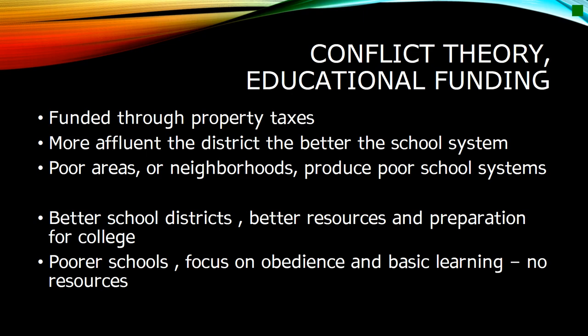The conflict perspective views the hidden curriculum of education in a negative light. It serves to keep students in line, primarily students of the working class, who attend poorer schools that tend to focus on obedience and basic learning. Middle class students will attend schools that encourage some independent or self-directed learning and have access to better resources. Upper class or students from affluent families generally attend private schools which help prepare students for college. Conflict theory also views tracking as possibly limiting a student's potential rather than serving to better address their needs.